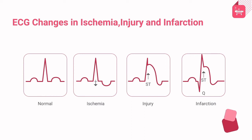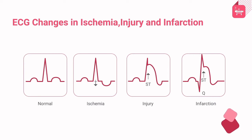In acute infarction, ST segment elevation is seen in two or more contiguous leads, with hyperacute T waves and change in the depth and width of Q waves. In chronic infarction, ST segment elevation may persist, T wave inversion or flattening is present, and Q wave changes are noted. In post-infarction, the ST segment returns to normal; T wave may be upright, flattened, or inverted; and a pathological Q wave is observed.